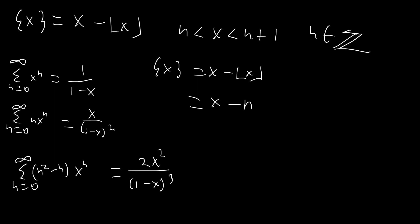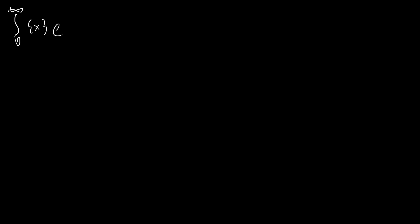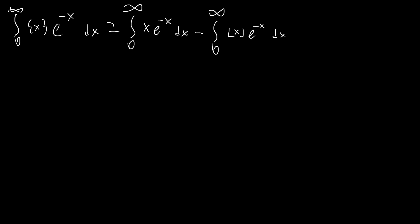Let's jump into the integrals. We're going to start with a warm-up one that's pretty similar to our two other integrals, but missing the square. It's just the integral of the fractional part of x times e to the negative x dx. We're going to write this as the integral from 0 to infinity of x e to the negative x dx minus the integral from 0 to infinity of floor of x times e to the negative x dx, since the fractional part of x equals x minus floor of x. This first integral is gamma of 2, which evaluates to 1.